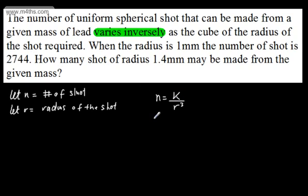So subbing in now, 2,744 will be equal to k over 1 cubed. We can see from here that k will be equal to 2,744.